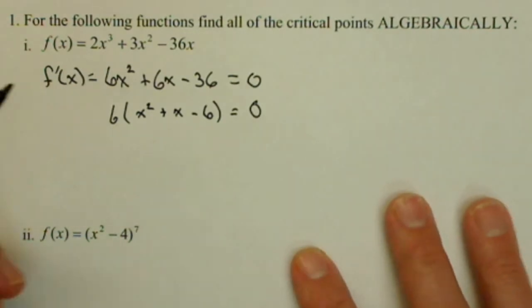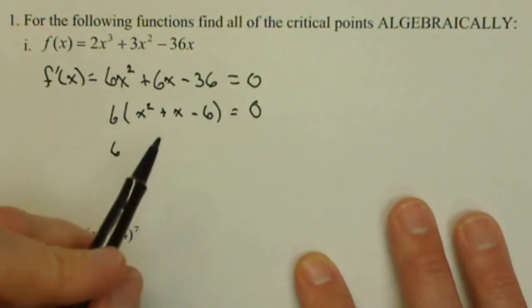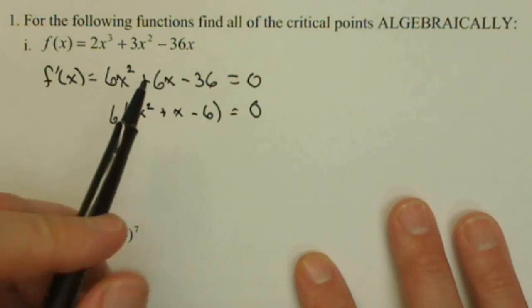If it's a larger polynomial, you might want to use a graphing calculator or some math program, Wolfram Alpha or something to find your zeros.